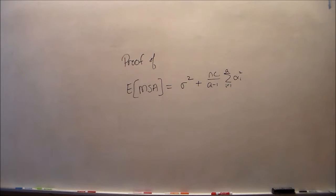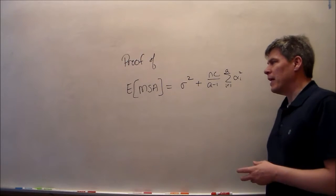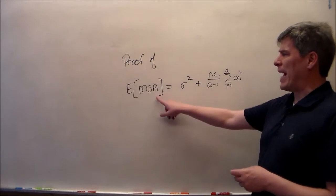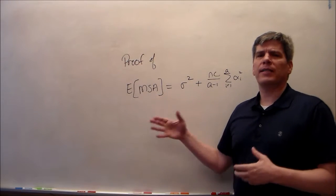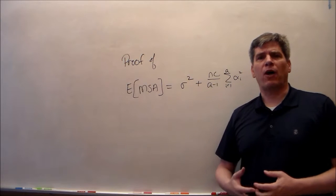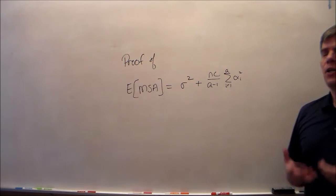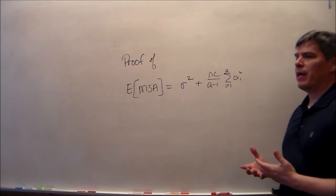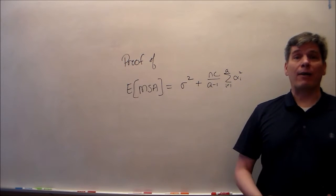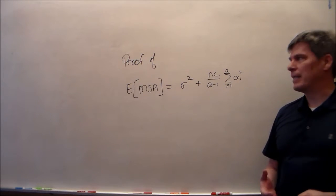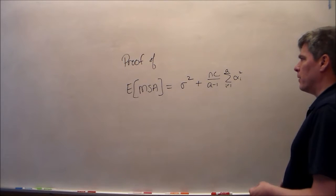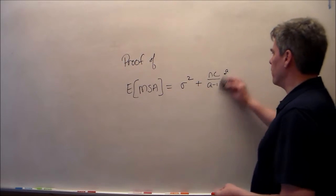Hello and welcome to this little extra. This is going to be proof of the expected mean squares. I'm going to do it for A — the mean squared A — but the process is the same for all of them. Notice that it's going to be a lot of algebra, and that's really all that this is. So let's start with the proof.